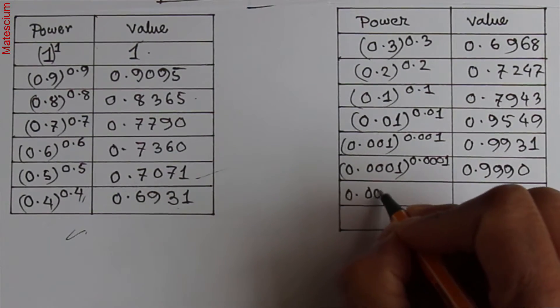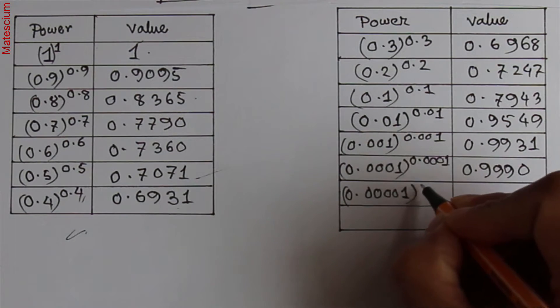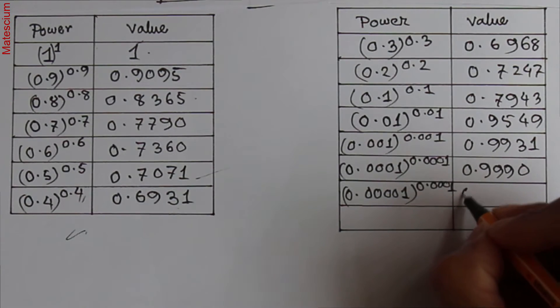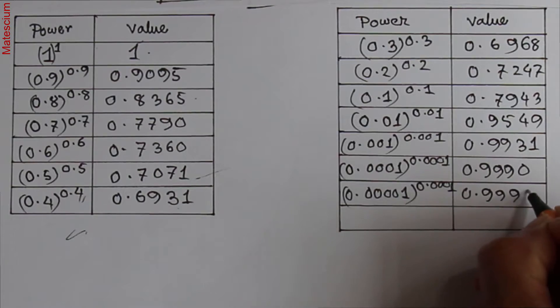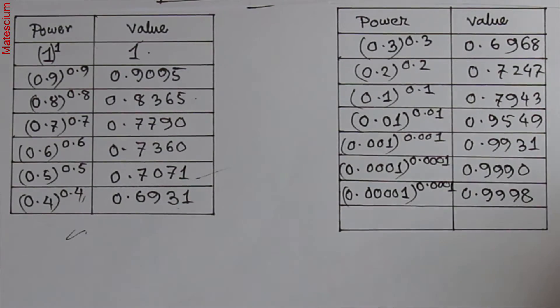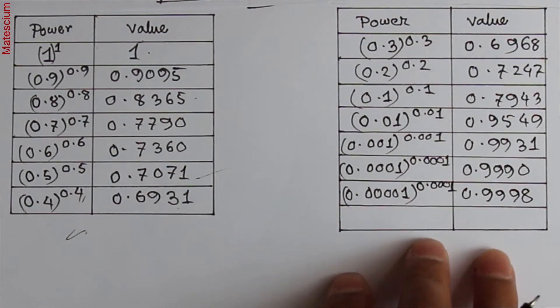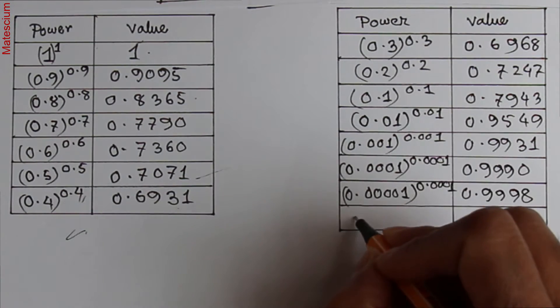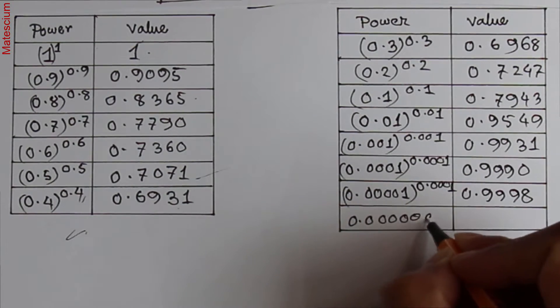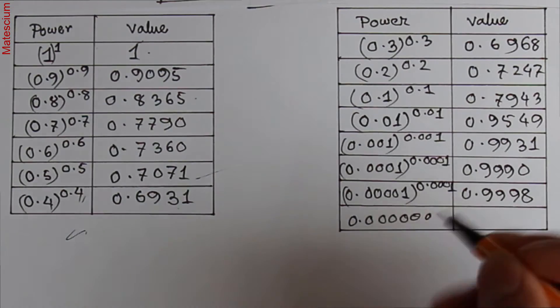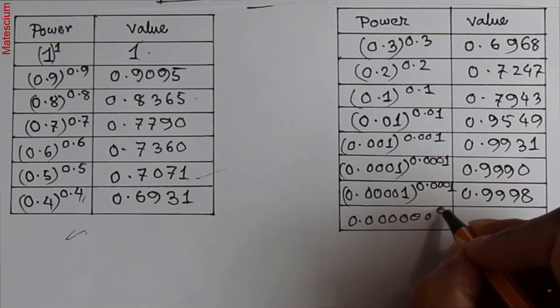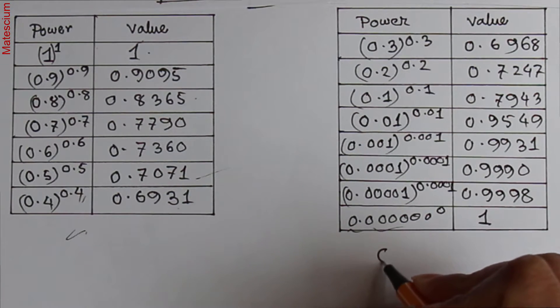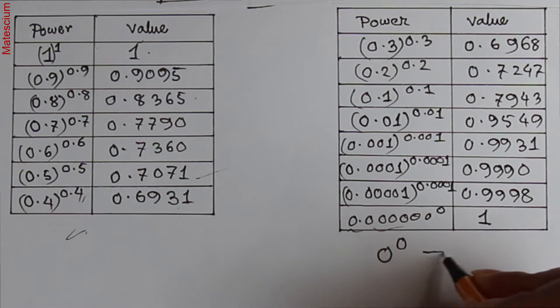0.0001 to the power 0.0001. That means 0.0001 to the power 0.0001 equals 0.9998 and so on. If you check with your calculator, you will see after a certain step of this power, it will be 0.000000 and so many zeros, then 0 to the power 0 equals 1. That means this value equals 0. I can say 0 to the power 0 equals 1.